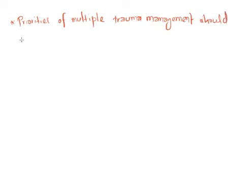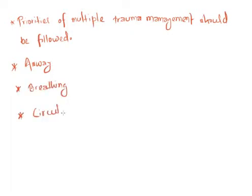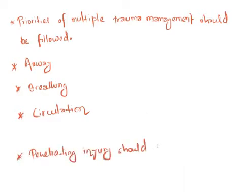Talking about the initial management of liver trauma, the priorities of multi-trauma management should be followed. We resuscitate the patient following the priorities of airway, breathing, and circulation. We transfuse blood to the patient and perform lab tests. Penetrating injury cases should undergo laparotomy most of the time.